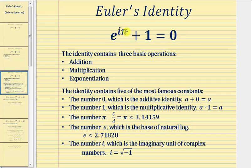And then finally, our equation contains the number i, which is the imaginary unit of the complex numbers, where i is equal to the square root of negative one.